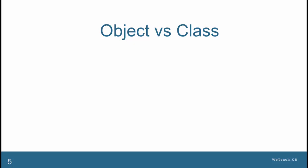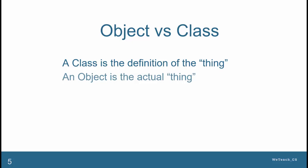First of all, it is important to understand the distinction between the terms object and class. Quite simply put, the class is the definition of the thing, and the object is the actual thing.